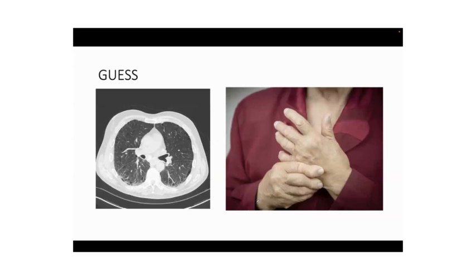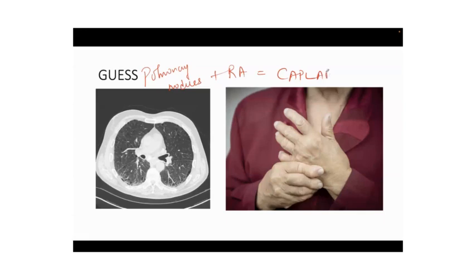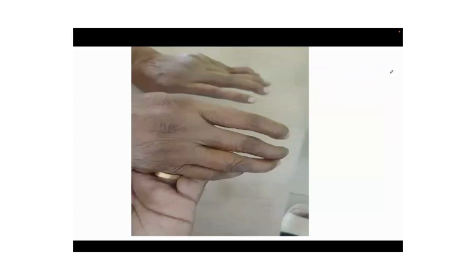Can you guess what this X-ray shows? Rheumatoid arthritis — I'll give you ten seconds. These are pulmonary nodules. Combined with rheumatoid arthritis this is called Caplan syndrome.